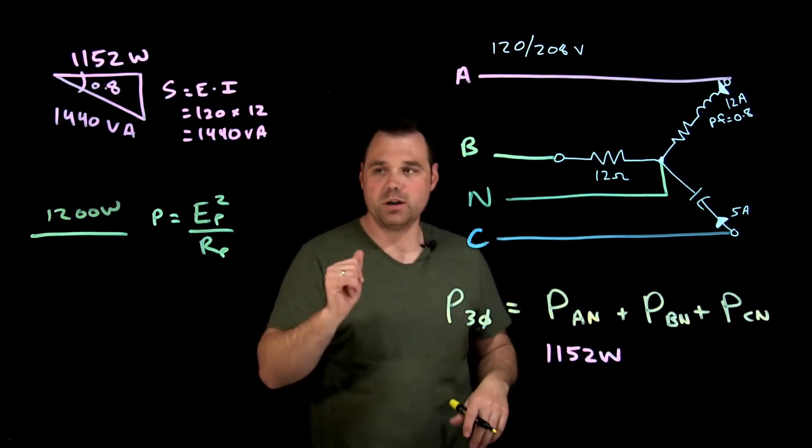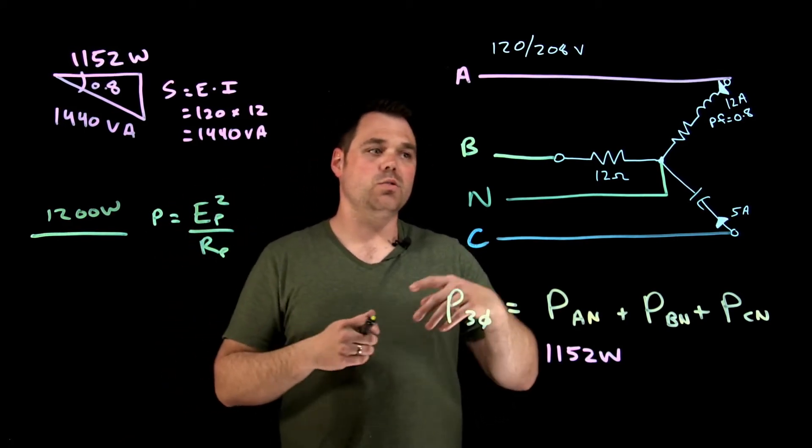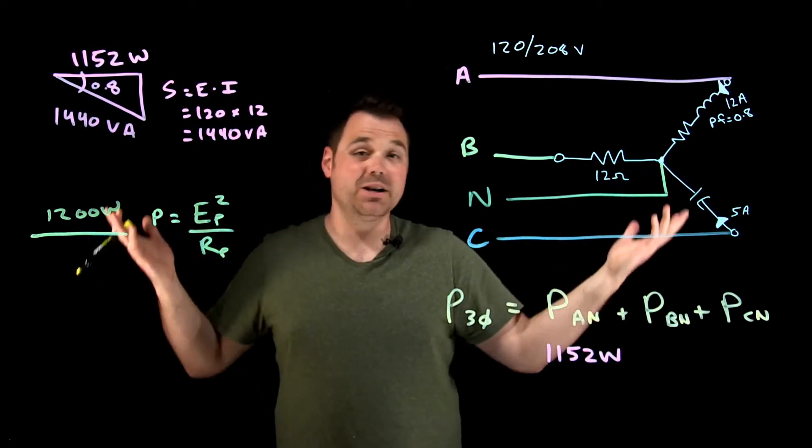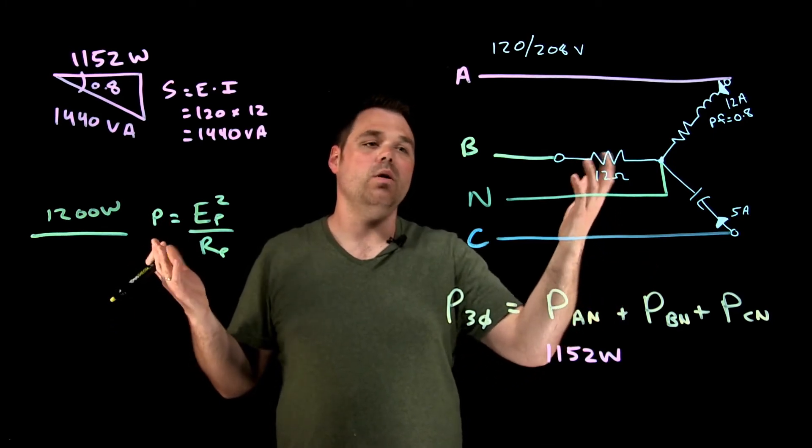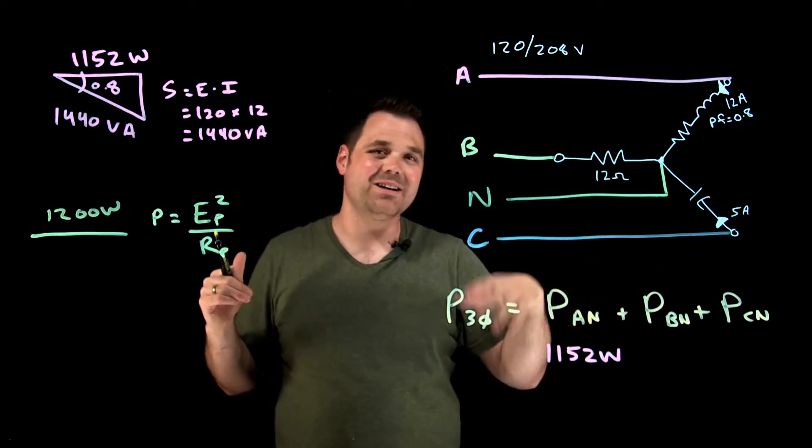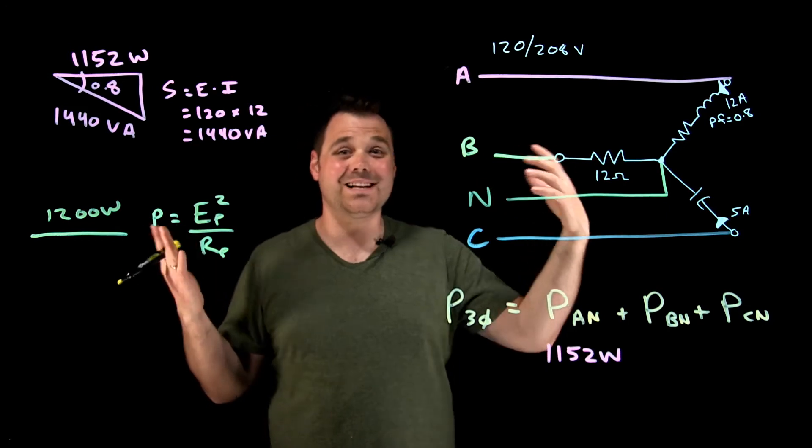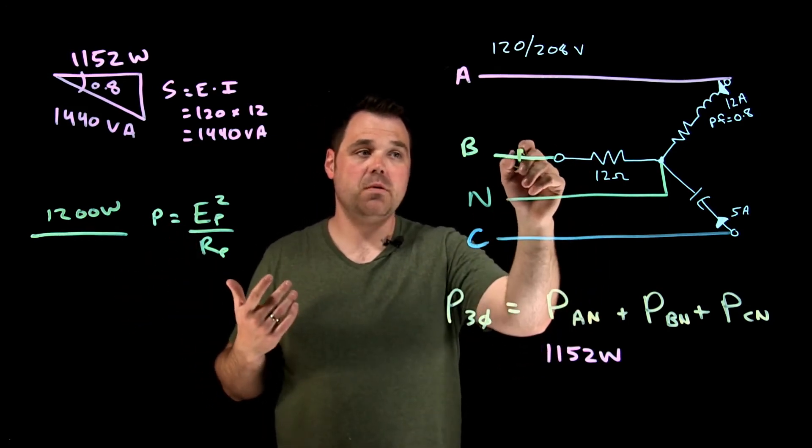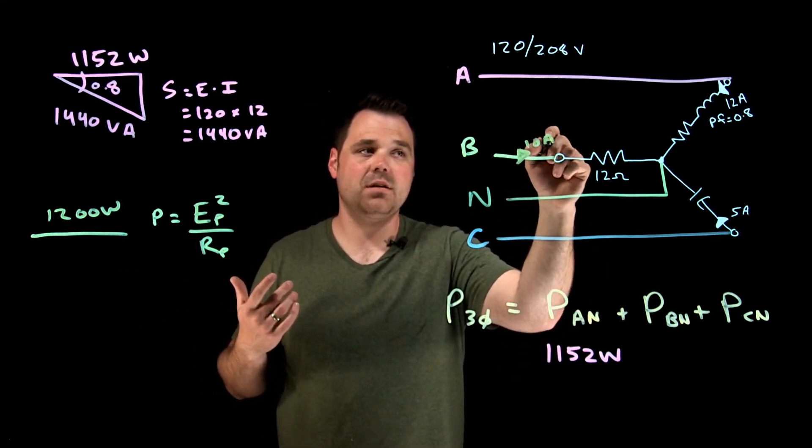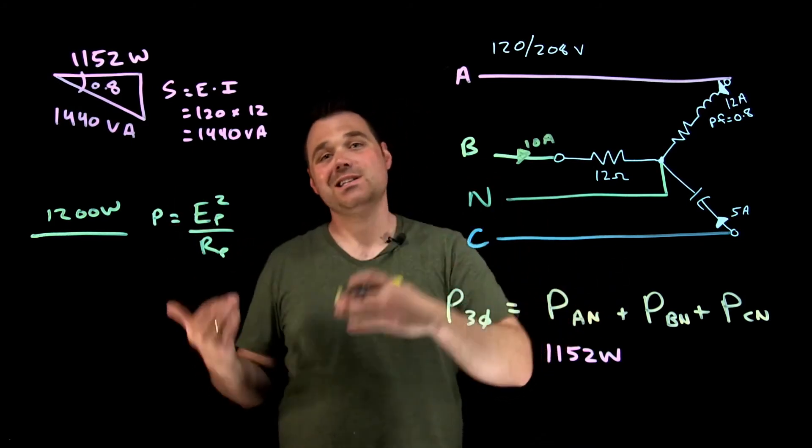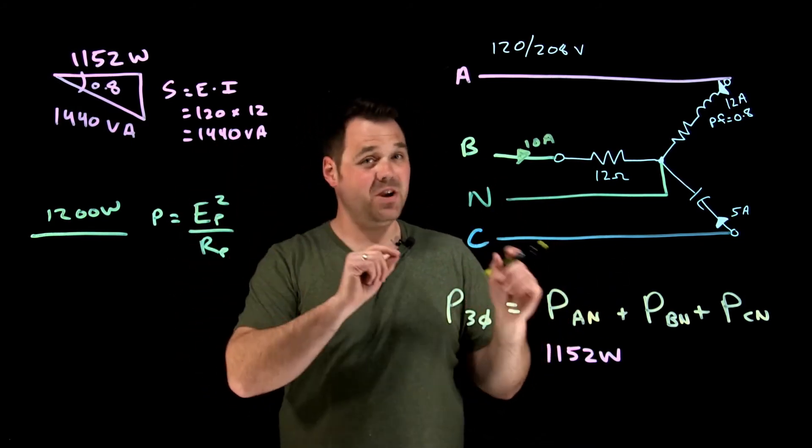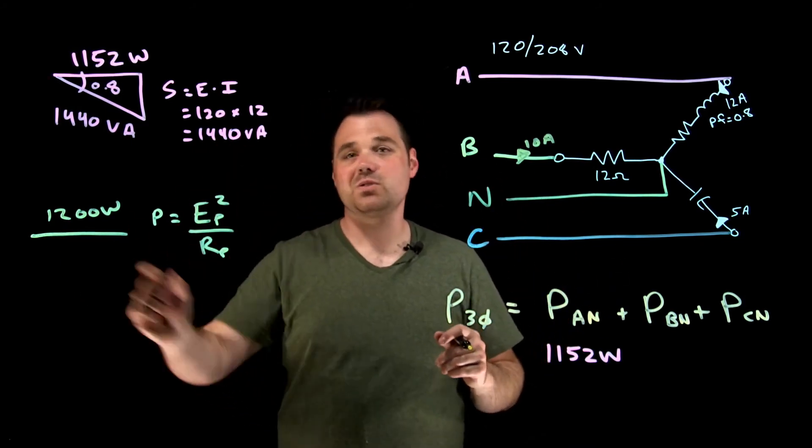Another way I could go about it, if you wanted, you could go P equals E times I. I know my power factor is one. Oh, I don't have I. 120 volts, 12 ohms, that gives me 10 amps. I could calculate out 10 amps times 120 volts, phase voltage, phase current gives me 1200 watts.